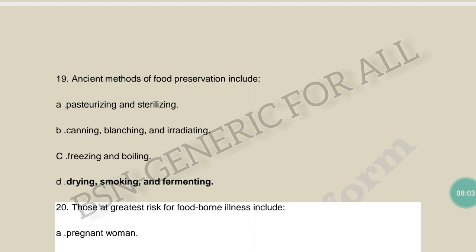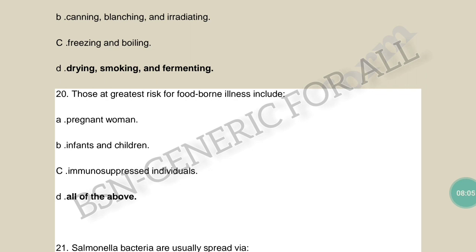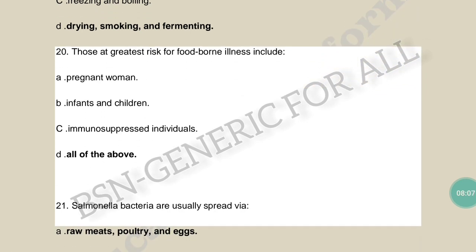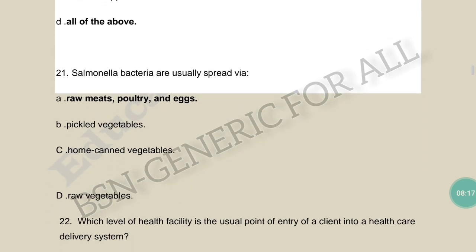Those at greatest risk for food-borne illness include pregnant women, infants and children, and immunosuppressed individuals. Salmonella bacteria are usually spread through raw meat, poultry, and eggs — not pickled or home-canned vegetables. Salmonella is typically found in animal food products.